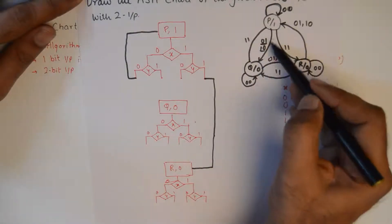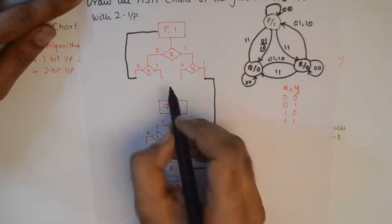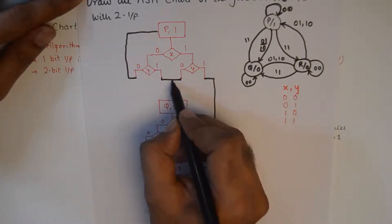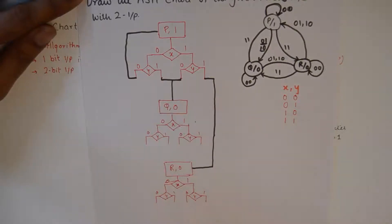See this transition for a 01 or a 10. I'm combining this and I'm taking this to state Q.